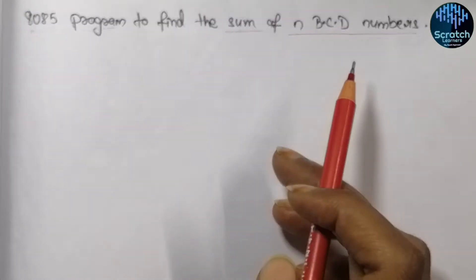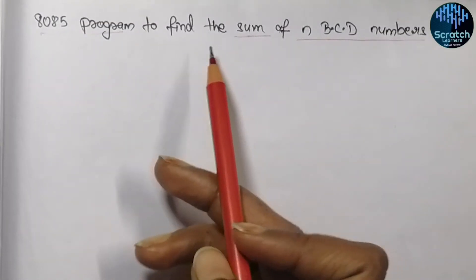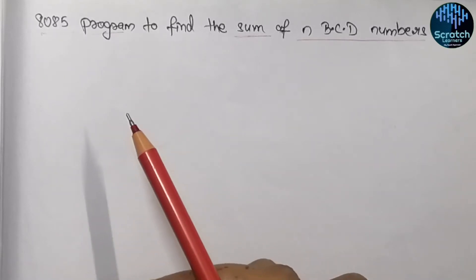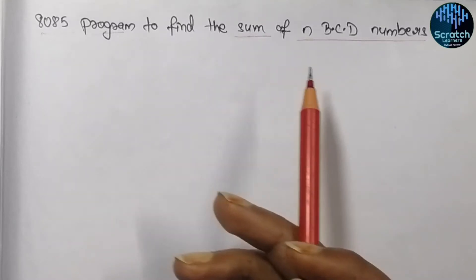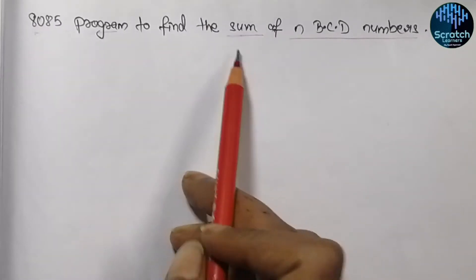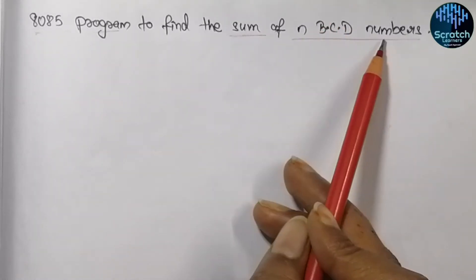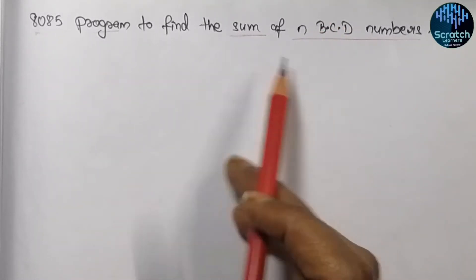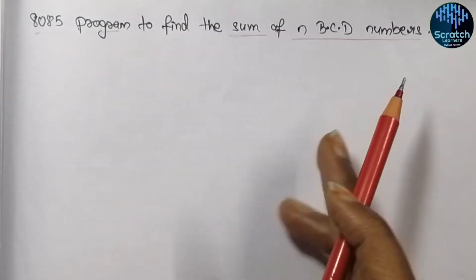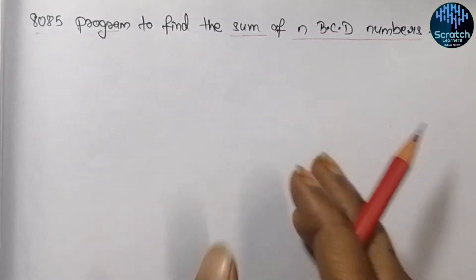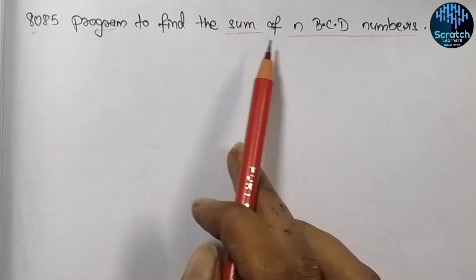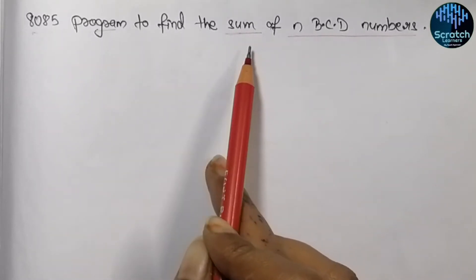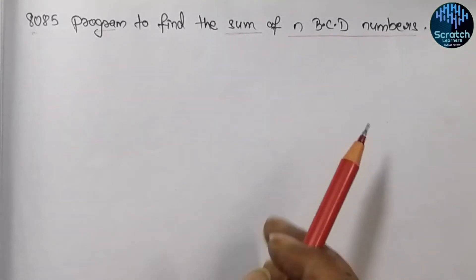So what is a BCD number? It is a Binary Coded Decimal number. We know that all operations in the microprocessor are performed in hexadecimal form, so all results we get for summation will be in hexadecimal. But if we sum numbers in BCD format — that means if we want to get a sum that is in BCD format — then we have to do some operation, and these are nothing but numbers in decimal.